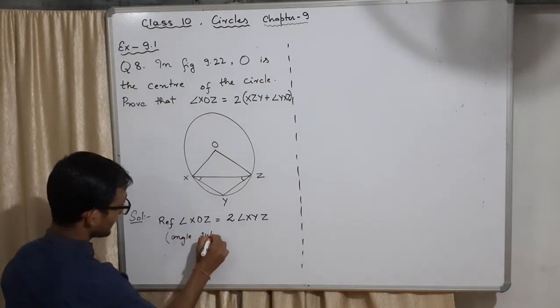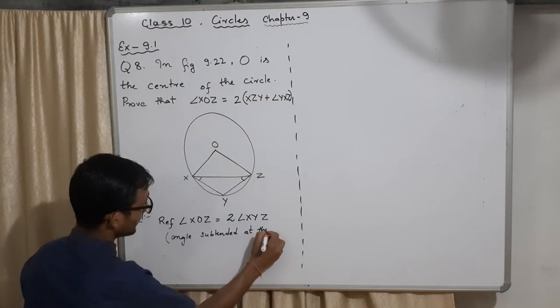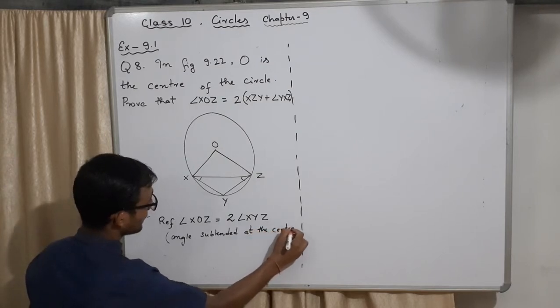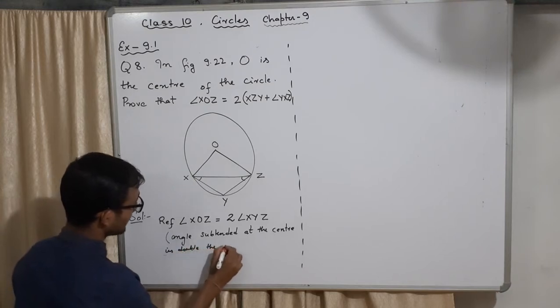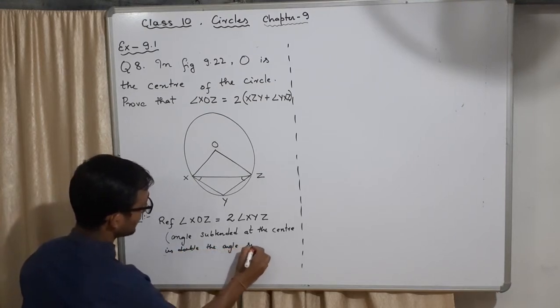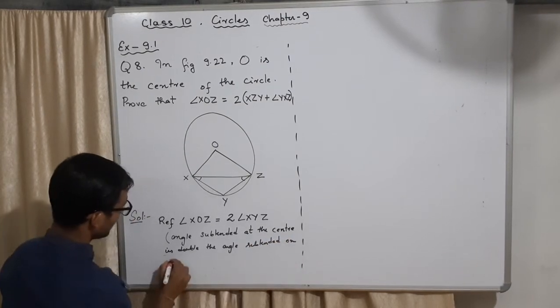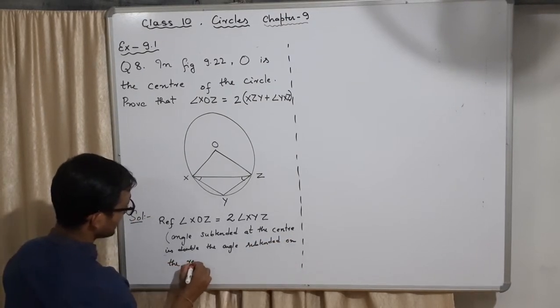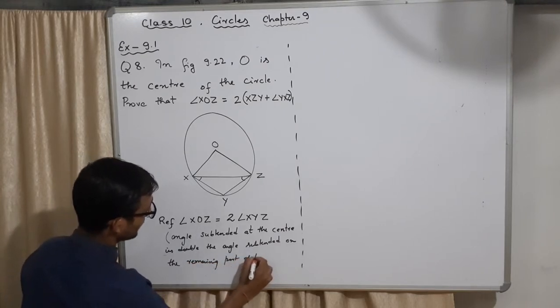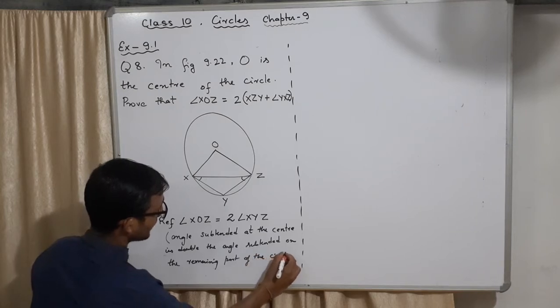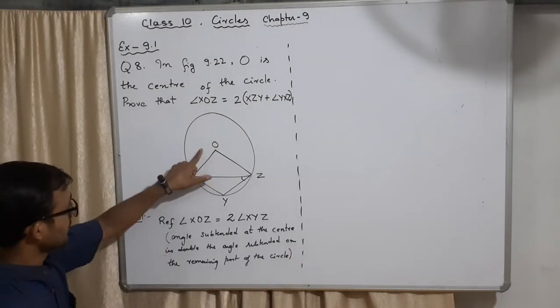Angle subtended at the center is double the angle subtended on the remaining part of the circle. This was in very short I wrote the reason. Why it is like the reflex angle is this angle, okay.